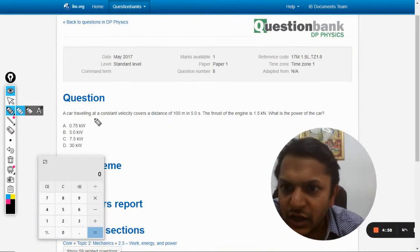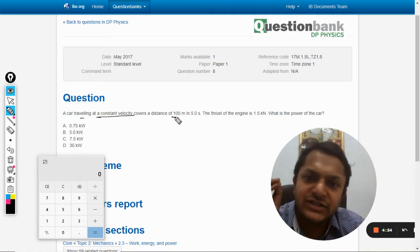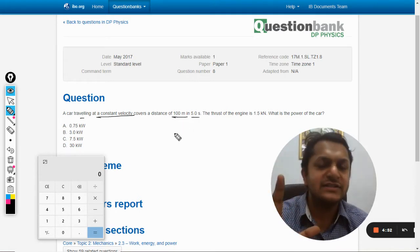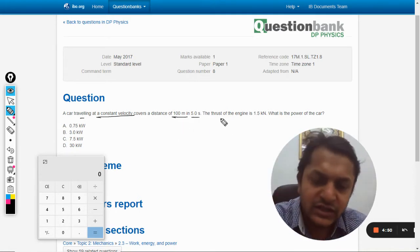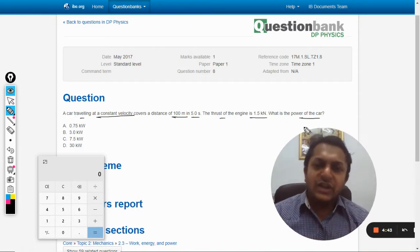Okay, so in this question, a car traveling at a constant velocity covers a distance of 100 meters in 5 seconds. The velocity is constant, the thrust of the engine is 1.5 kilonewtons. What is the power of the car?